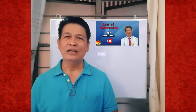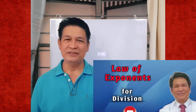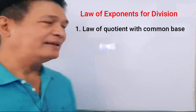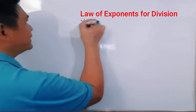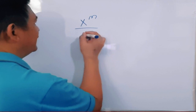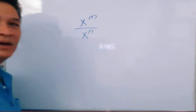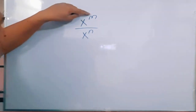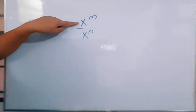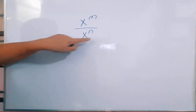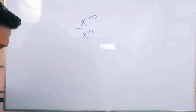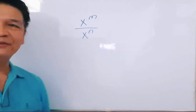Today we're going to discuss about the laws of exponents for division. Under this, we have the quotient with a common base. For example, x raised to m over x raised to n, wherein x is the common base of your fraction, m denotes the exponent of your numerator, and n denotes the exponent of your denominator. To solve this, there are three cases.